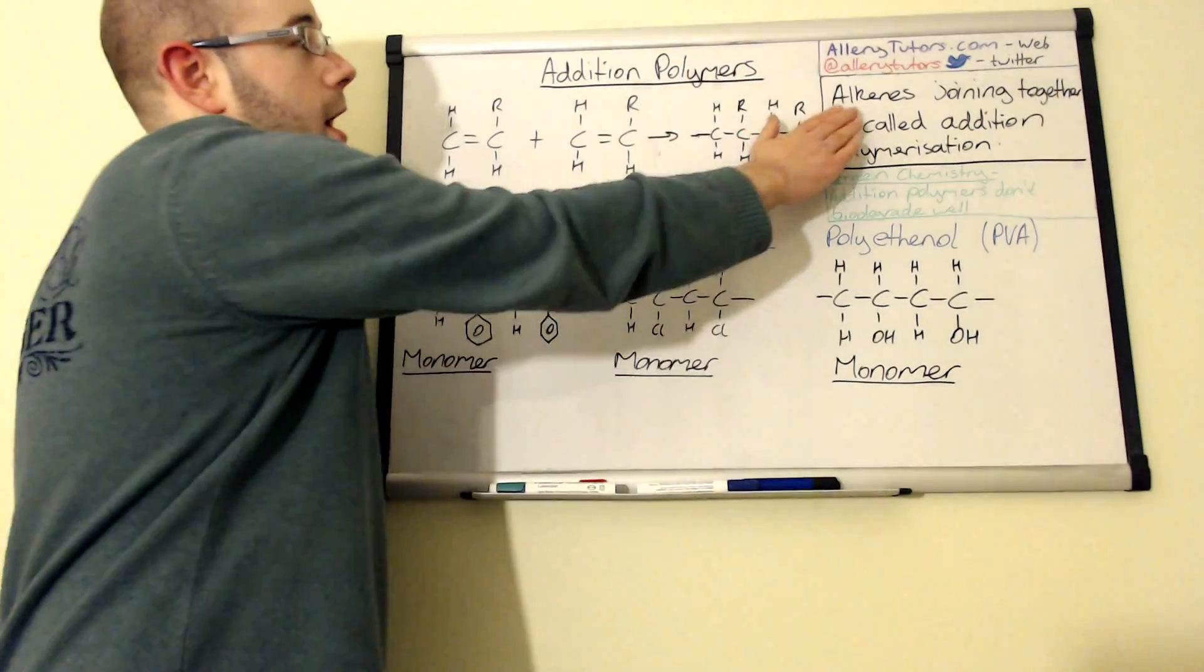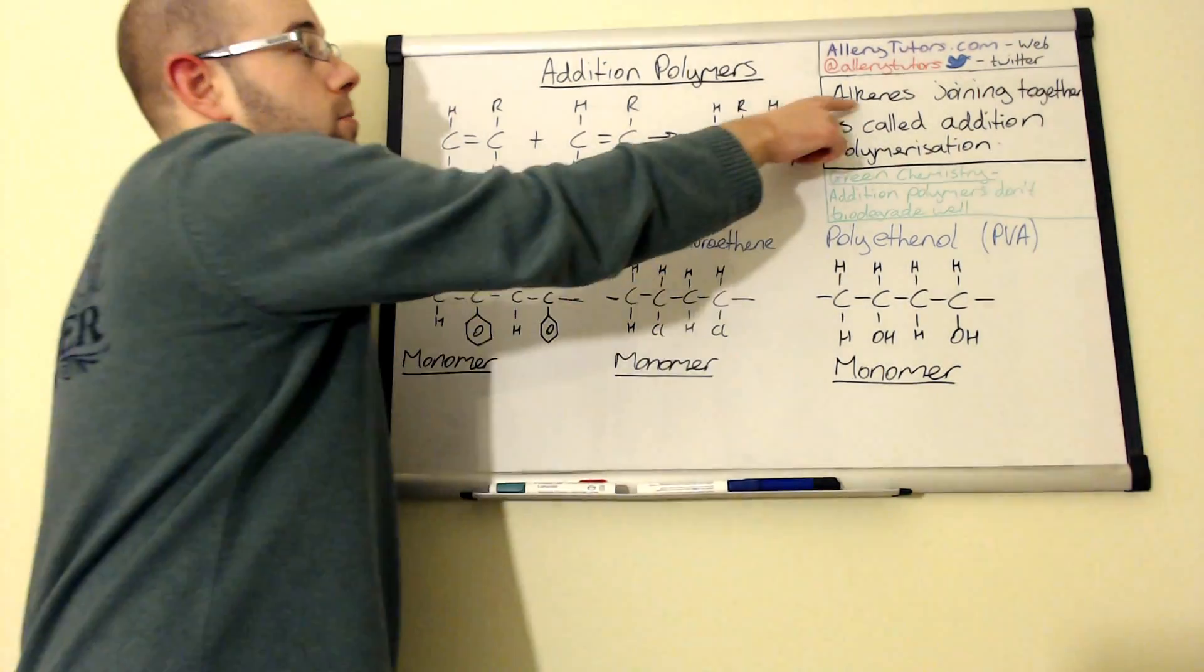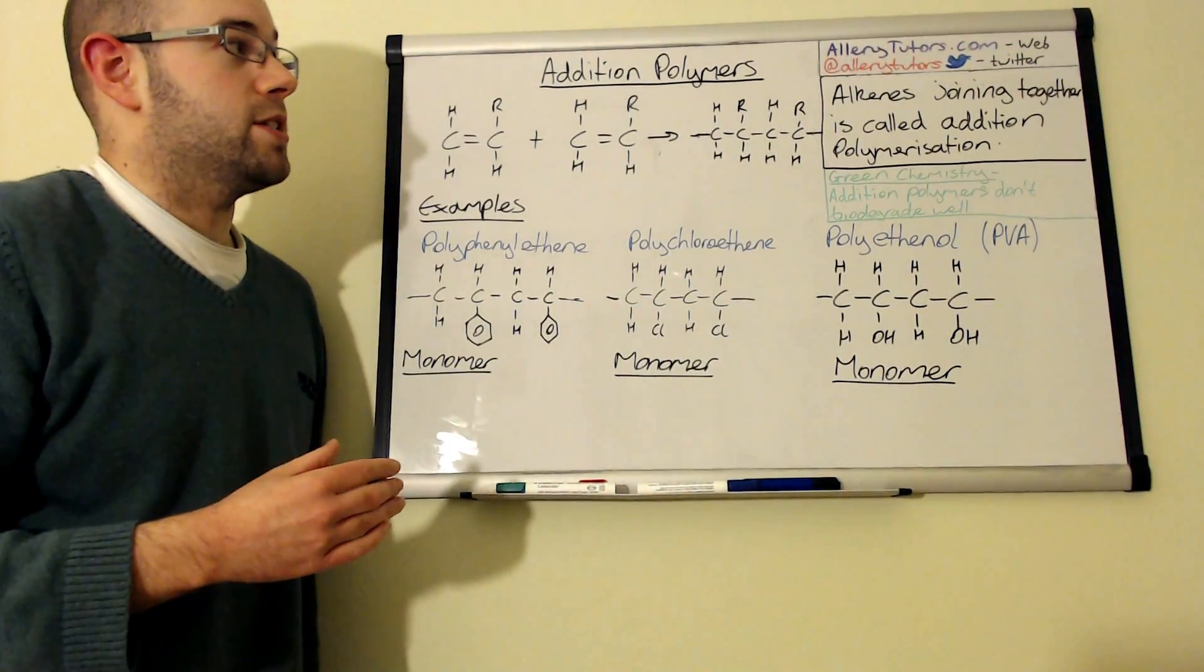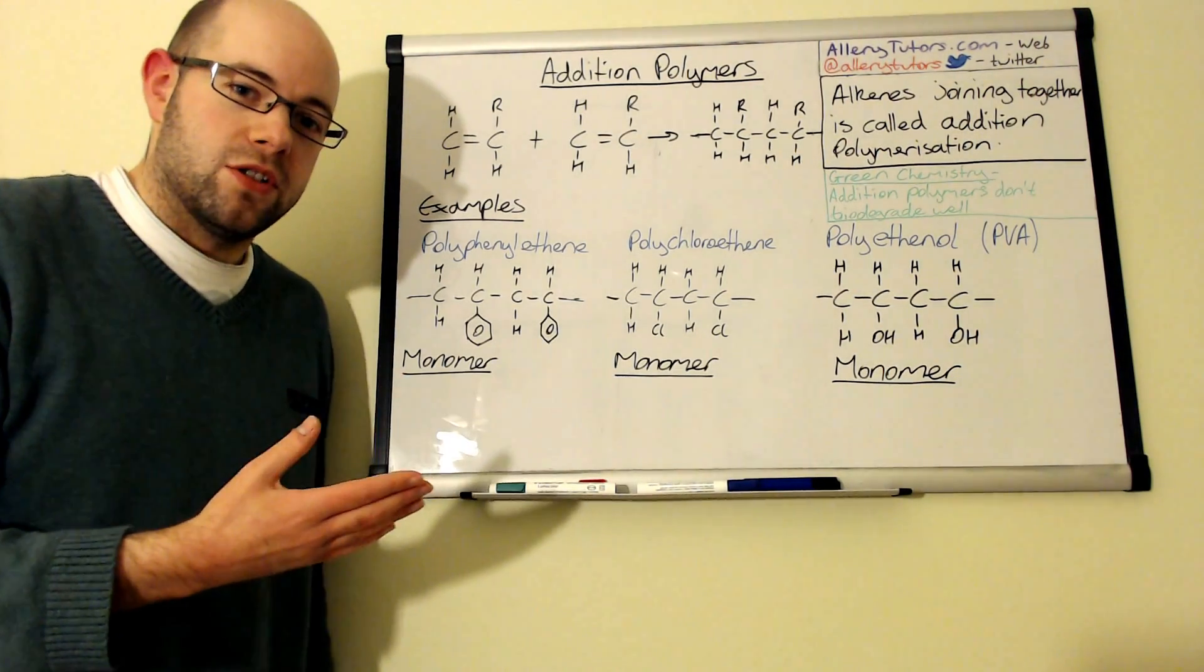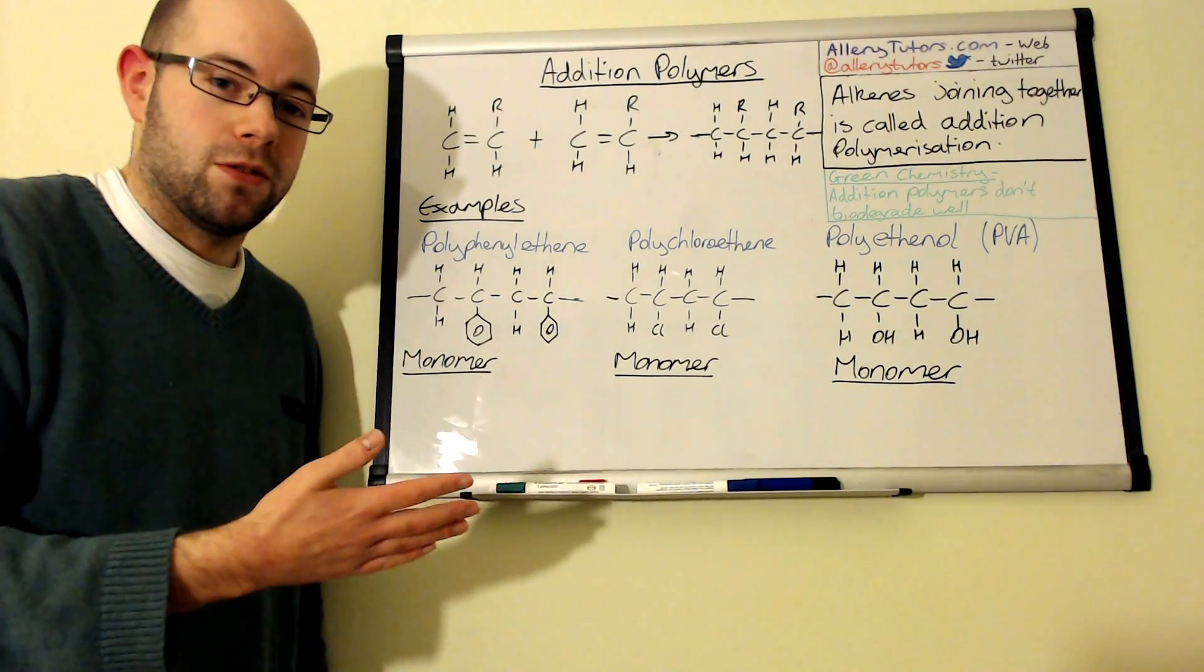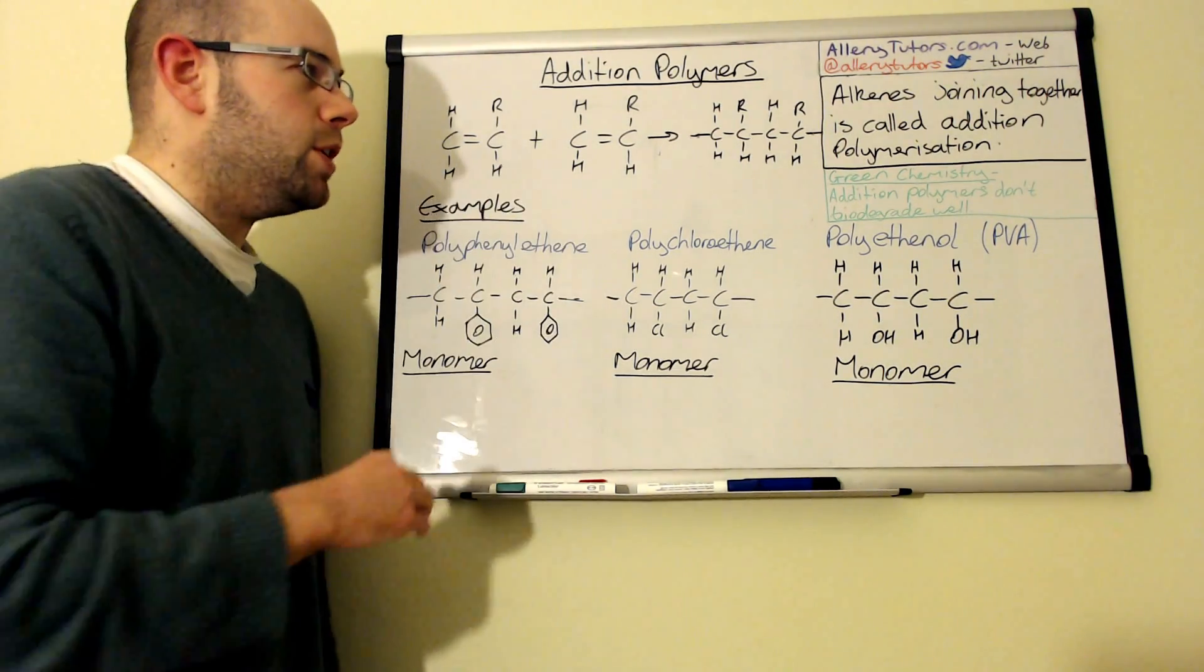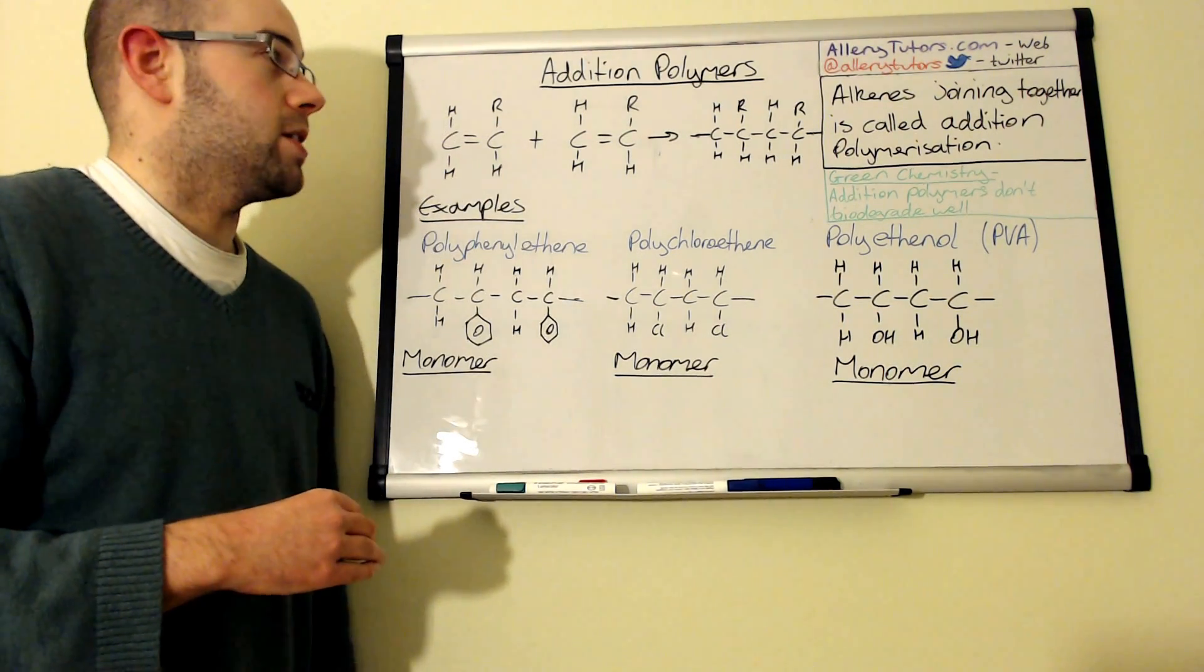So we're going to start with how this actually happens. You can see here we've got alkenes joining together, it's called addition polymerization. Normally this reaction goes via a radical reaction, although you don't need to know this for this particular example.